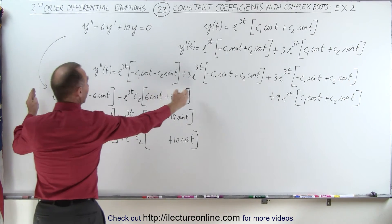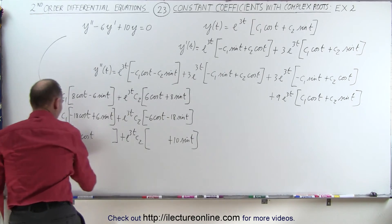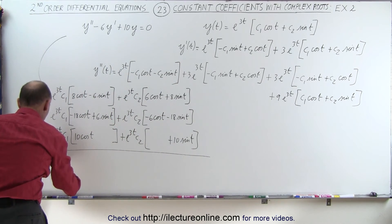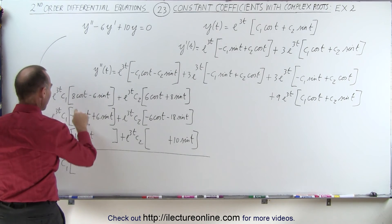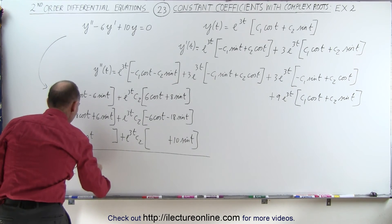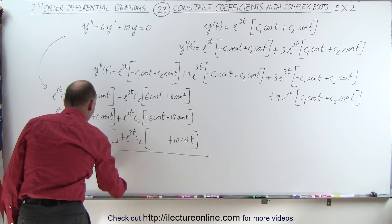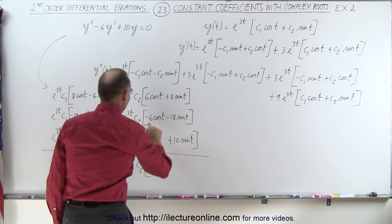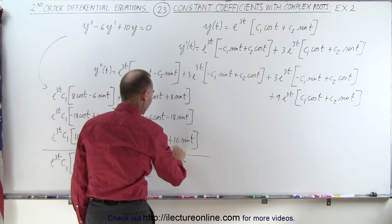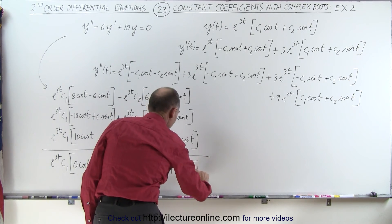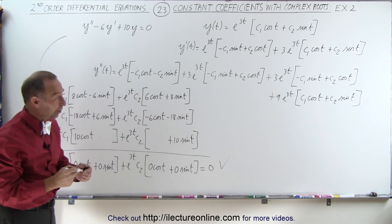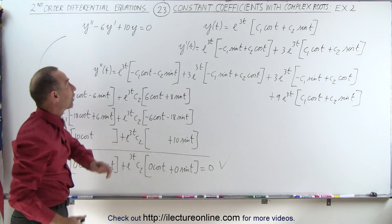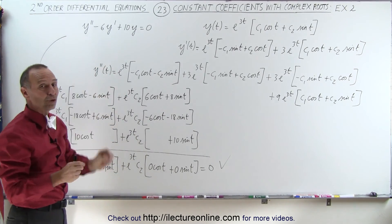Adding y double prime, minus 6y prime, and plus 10y together should equal zero. For e to the 3t times c1 terms: plus 8 minus 18 plus 10 gives 0 cosine of t, and minus 6 plus 6 gives 0 sine of t. For e to the 3t times c2 terms: plus 6 minus 6 gives 0 cosine of t, and plus 8 minus 18 plus 10 gives 0 sine of t. Everything adds up to zero, confirming this is the correct general solution to this second-order homogeneous differential equation with constant coefficients that yields complex roots.